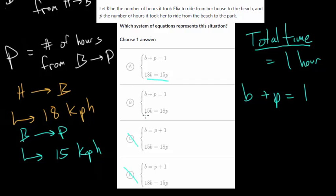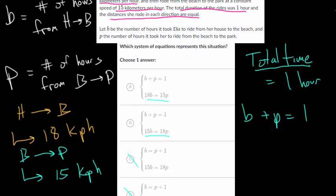And this will at least give a hint to how to solve the next one. Our next clue we want to use is that the distance in each direction is the same. We can say that the distance from the house to the beach is equal to the distance from the beach to the park. I'm using the subscript HB or BP to mean house to beach and BP to mean beach to park. And the question now becomes, how do we find the distance? We know we've got these variables representing hours and we've got these speeds.